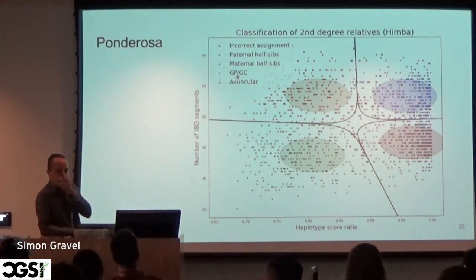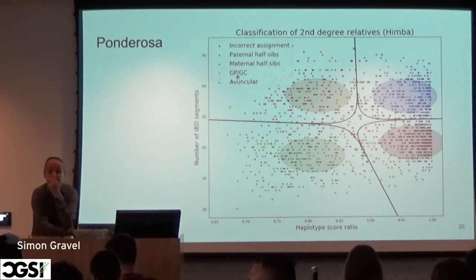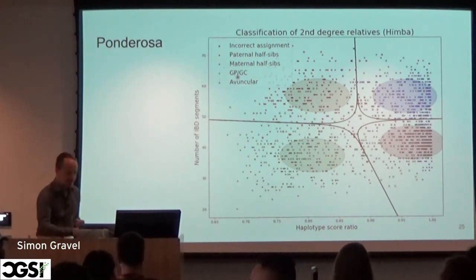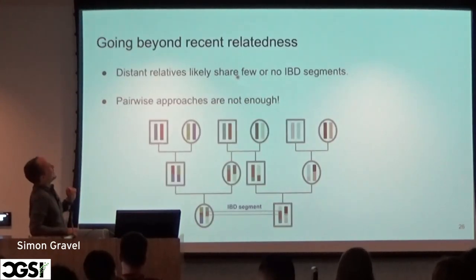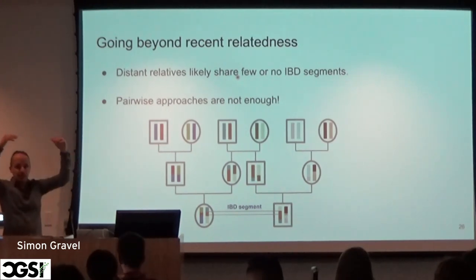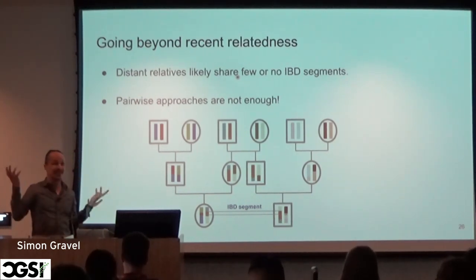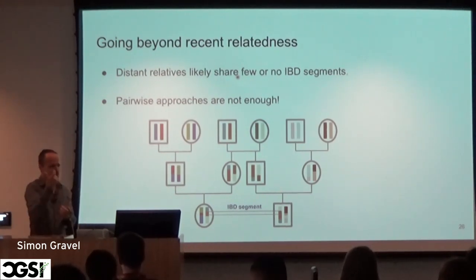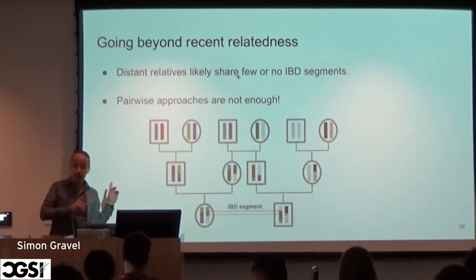It's fairly easy to identify close relatives because they share a lot of DNA, but as soon as you go more than a couple of generations, it gets really hard — eventually you're going to end up sharing just one segment or zero segments. If you share nothing, you can't learn the relationship; if you have just one segment, it's very difficult to pinpoint how old it is. There's no way of solving this problem by looking at pairs of individuals alone.